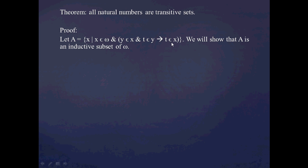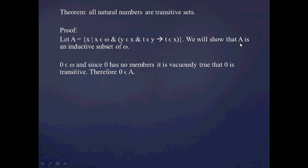So what we're going to do is show that A is an inductive subset of omega, and that'll imply that A is equal to omega. The first step in proof by induction: we're going to show that 0 is in this set A. We can indeed see that 0 is in omega, so it satisfies that first condition.